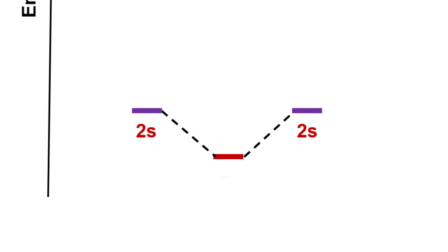In the last video on the application of molecular orbital theory to lithium and beryllium molecules, we saw that above the 1s orbitals there are 2s orbitals which overlap with each other to form one bonding molecular orbital named sigma 2s, and the other is the antibonding molecular orbital sigma star 2s.